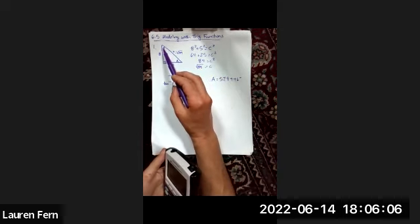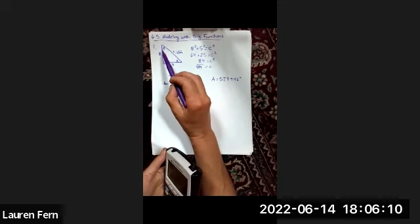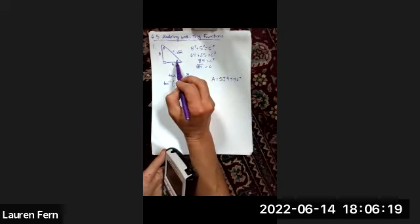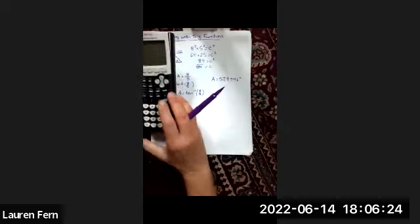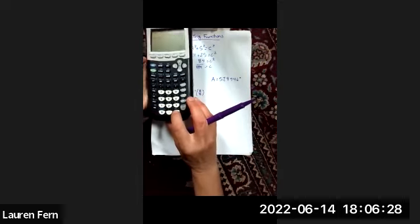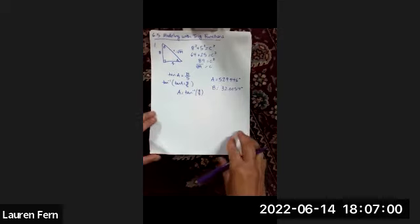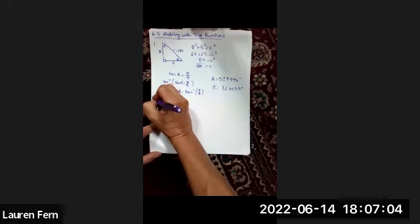From here, we could use an inverse trig function to get angle B — inverse sine, inverse cosine, or inverse tangent. But another thing we can say is that angle A and angle B must add up to 90 degrees. So I'd just take 90 minus the angle we found to get angle B. The sum of angles in the triangle is 180 degrees, so these two must be complementary. You can verify with inverse trig functions that you'll get the exact same measure.